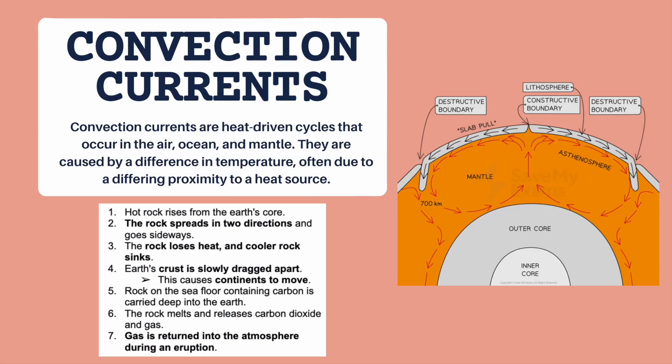Convection currents are heat-driven cycles that occur in the air, ocean, and mantle. They are caused by differences in temperature, often due to differing proximity to a heat source. You can see the image here — it's kind of like a cycle with arrows moving. When material comes near the heat source it's really hot, then it cools down and the cooler rock goes back in again.